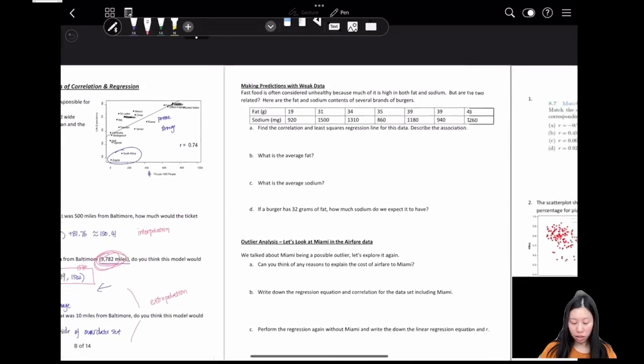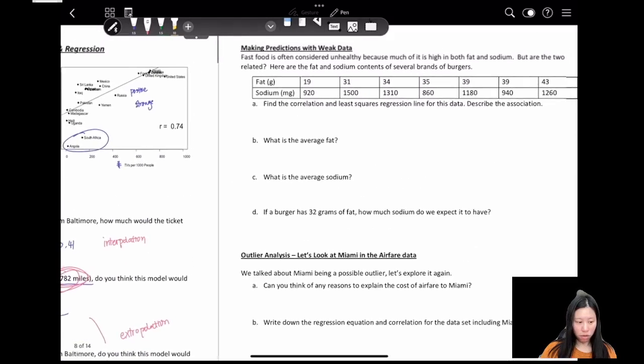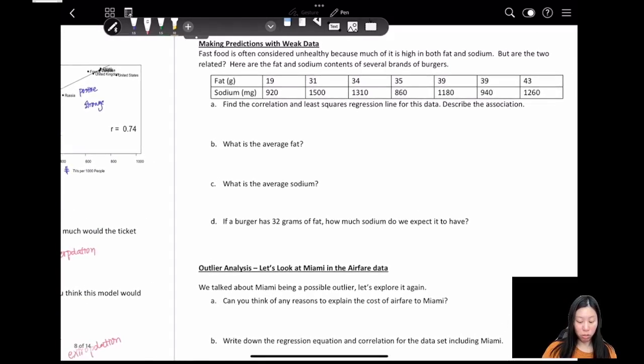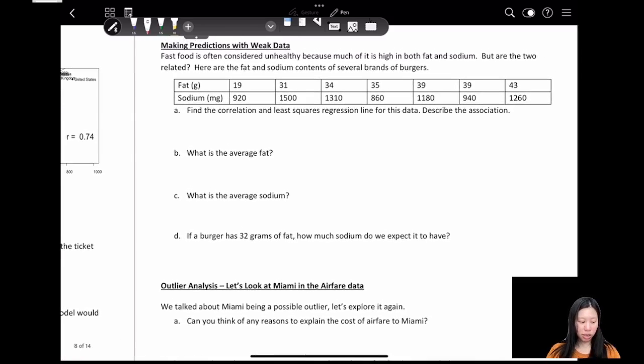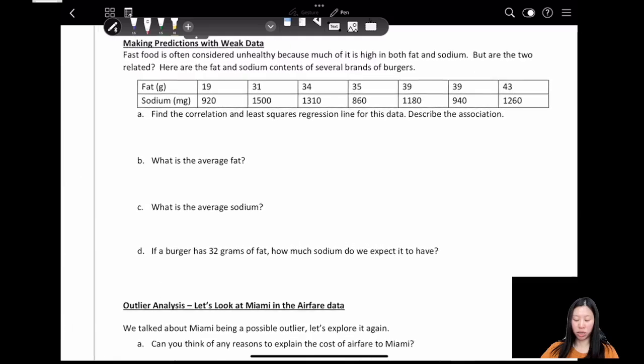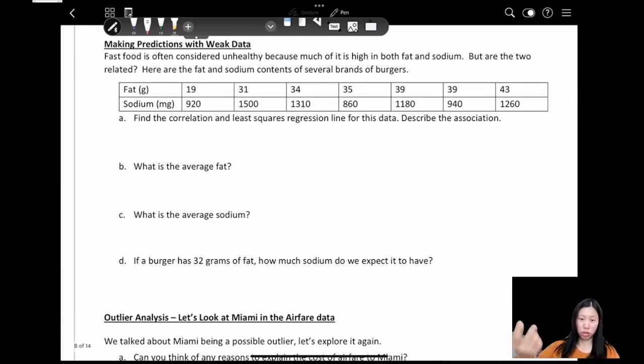Another feature of correlations is making predictions with weak data. Let's take a look. Fast food is often considered unhealthy because much of it is high in both fat and sodium. But are these two related? Here are the fat and sodium contents of several brands of burgers. I'm going to use GeoGebra to find out.